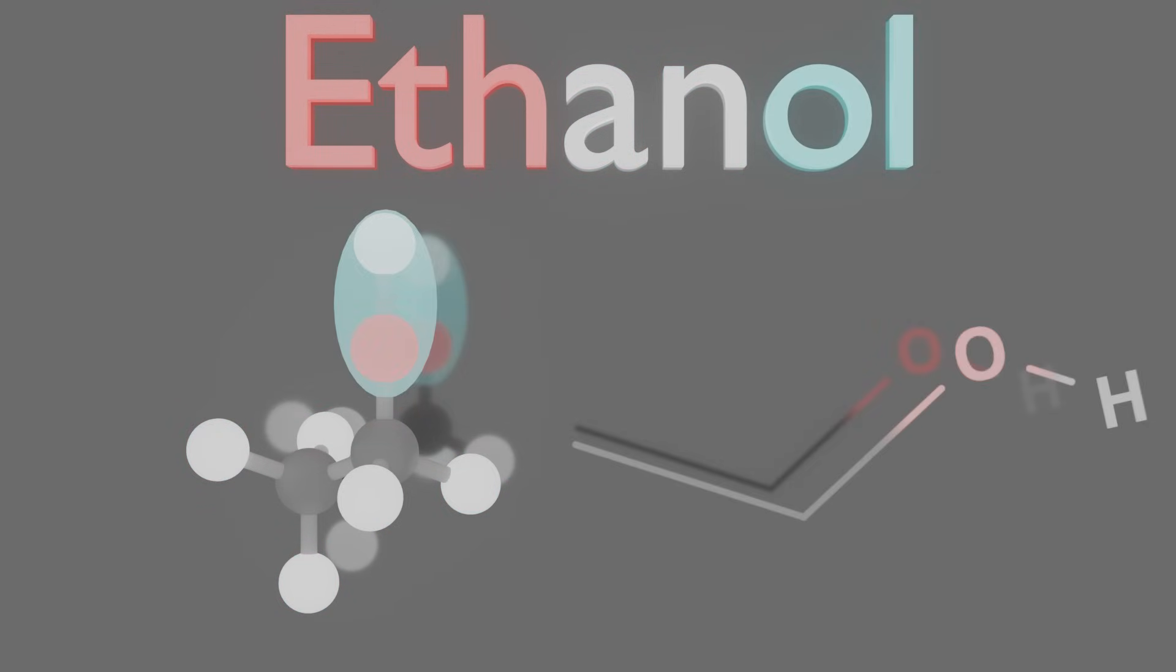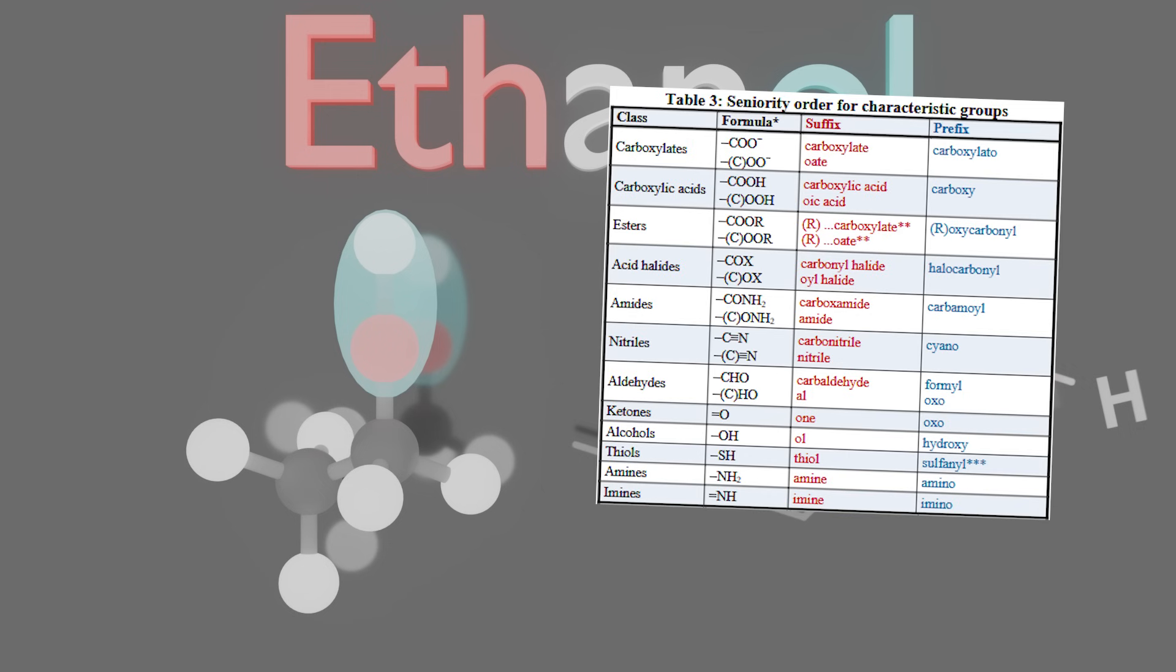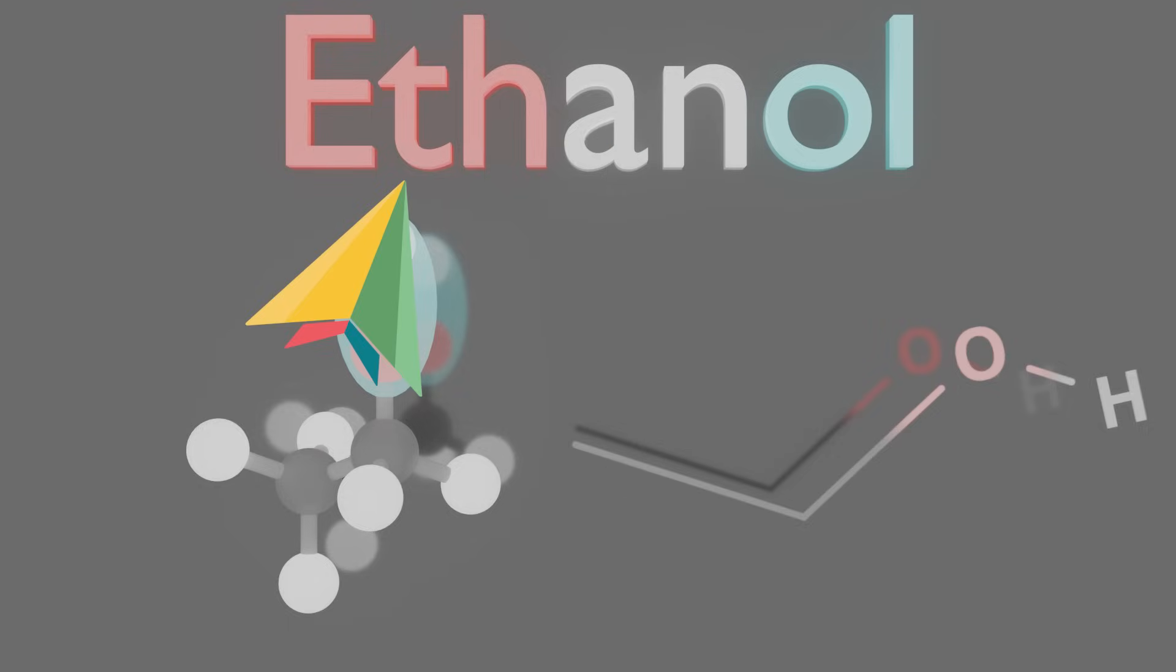And as scary as it may sound, functional groups are just different compounds that appear all the time. Here you can see a table with some of them. And look, that's the alcohol, right there. You can see there's an oxygen and hydrogen, and it has a suffix -ol. It really is that simple. Eth, two carbons, -ol, oxygen and hydrogen. With the hydrogens to cap them off.